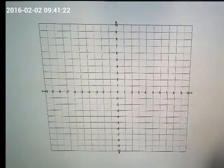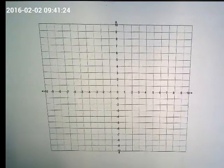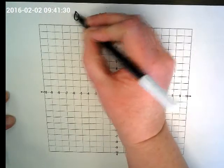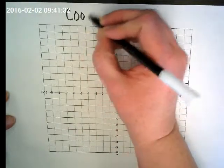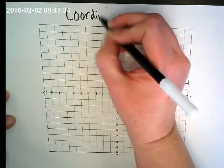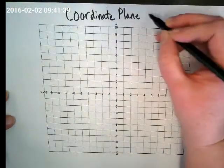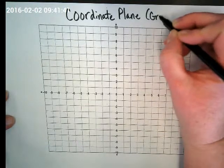All right, so we're going to start off with our first vocabulary term. This is referred to as coordinate plane, or sometimes you'll also hear it called a coordinate grid.